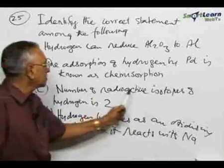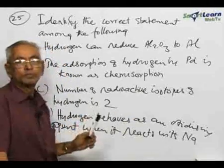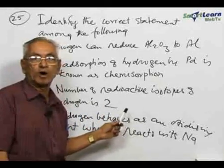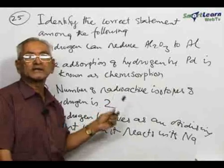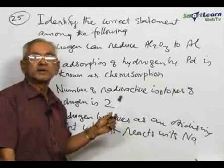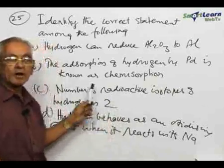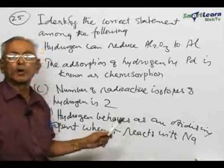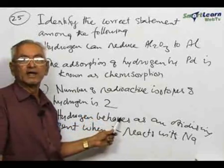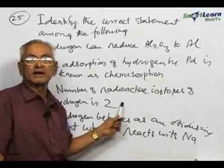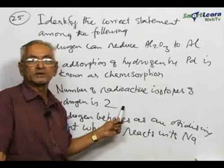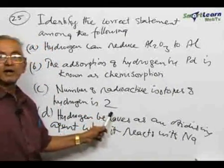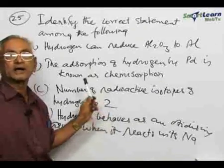The third statement is: the number of radioisotopes of hydrogen is 2. Hydrogen exists in three different forms: hydrogen, deuterium with atomic mass 2, and tritium with atomic mass 3. Of the three, hydrogen and deuterium are not radioactive. Only tritium, which is found in traces — the percentage of deuterium in the mixture is only about 0.015% — is the only radioactive isotope. So the statement that the number of radioactive isotopes of hydrogen is 2 is also not correct.